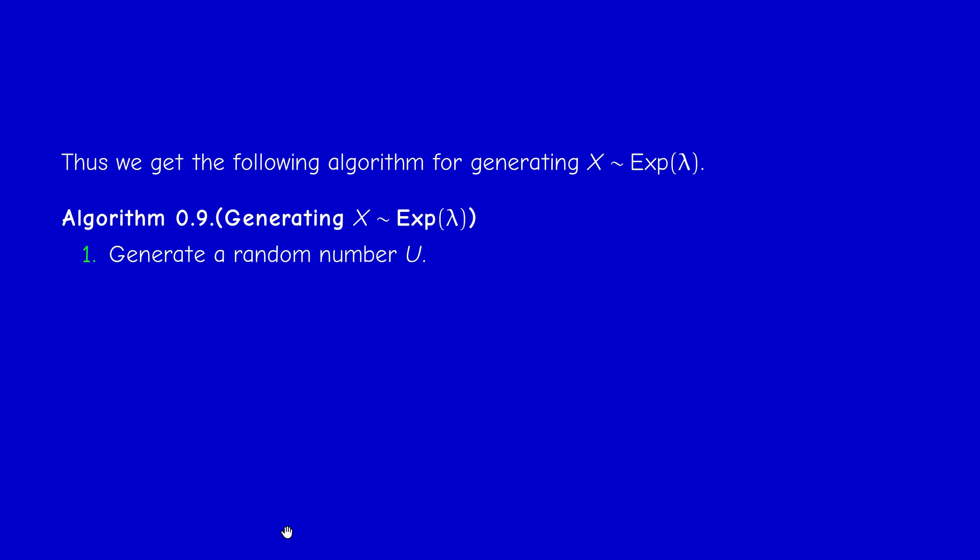This is a particular case of Algorithm 0.8. To generate an exponential random variable with parameter λ: first generate a uniform random number U, then take −log(U) / λ. That's it — it's very simple.